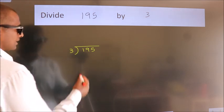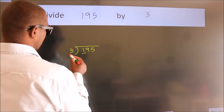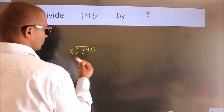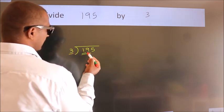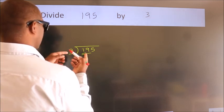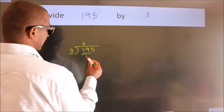Next. Here we have 1, here 3. 1 smaller than 3. So we should take 2 numbers, 19. A number close to 19 in 3 table is 3, 6, 18.